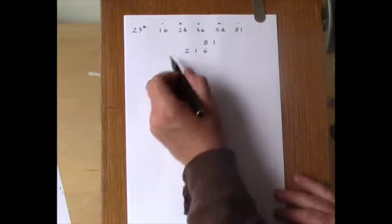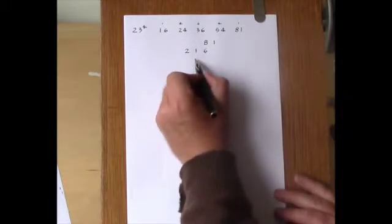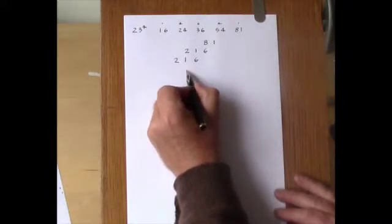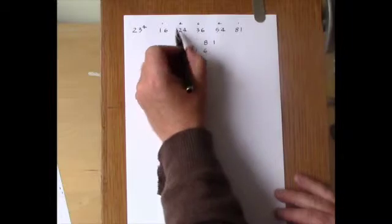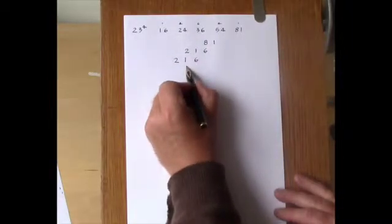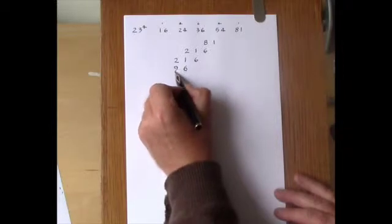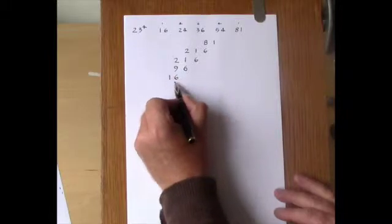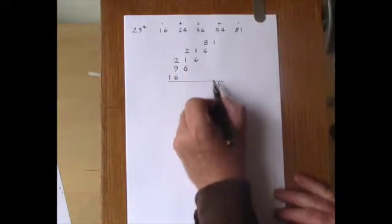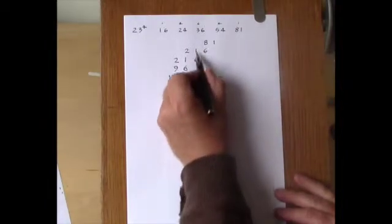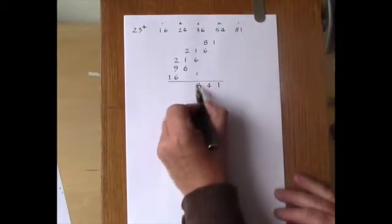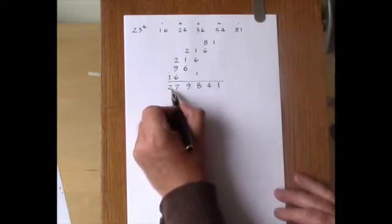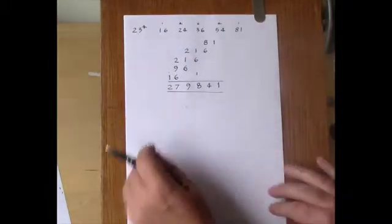Starting in the next column, working to the right, we need 6 times 36, which is also 216. In the next column we need 4 times 24, which is 96. In the next column we need 1 times 16. Then we can just add up: 1, 8 times 6 is 14. That makes 8. This is 9. 15 is 17, 16 and 2. So that's 23 to the power of 4.